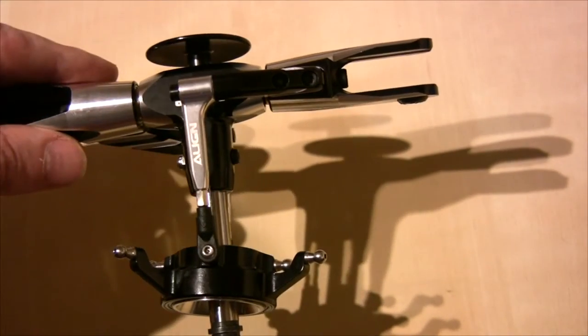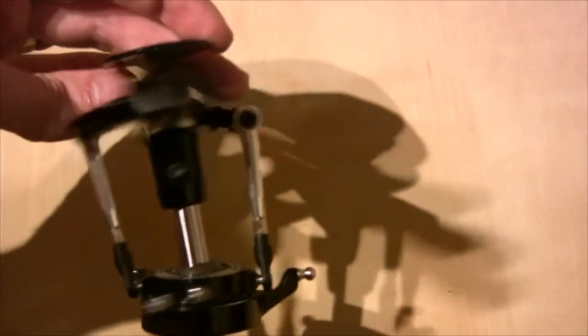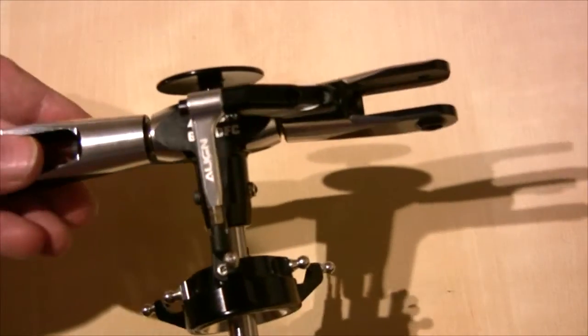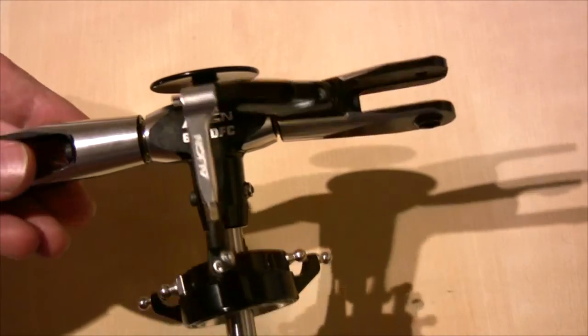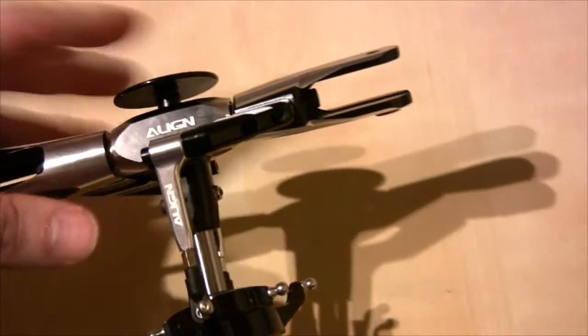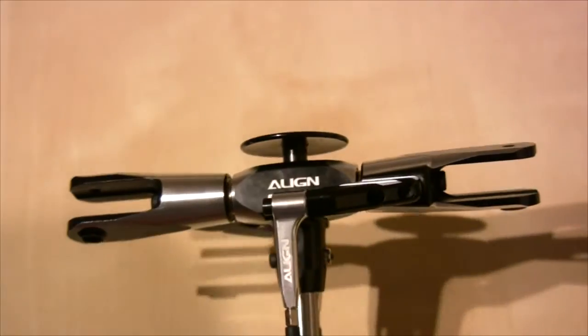Aside from that, really nothing else to it. It was very straightforward. Just take the blade grips and the old head out, put the new head in, put the blade grips on it, put the arms on, connect it up to the swash plate, put the new main shaft in. Pretty much job done.